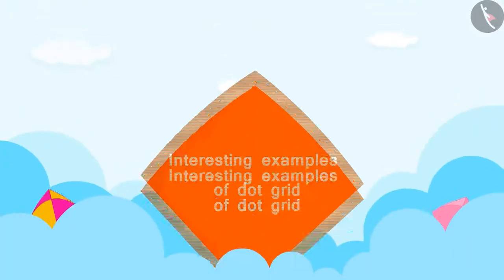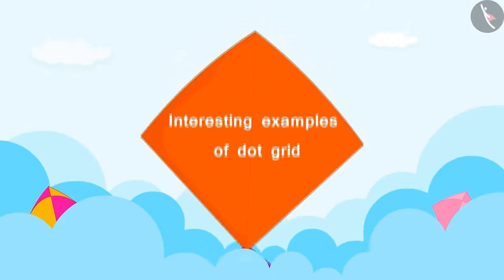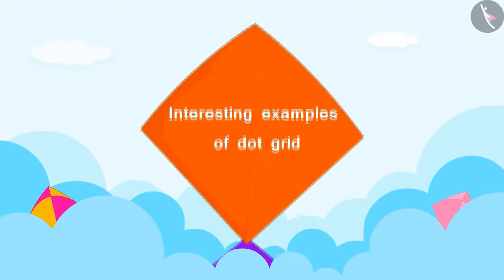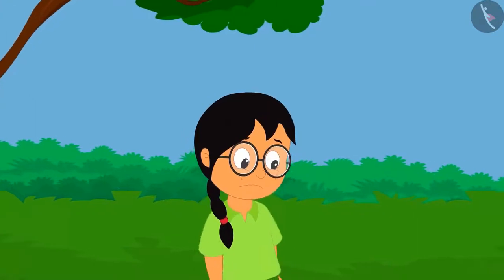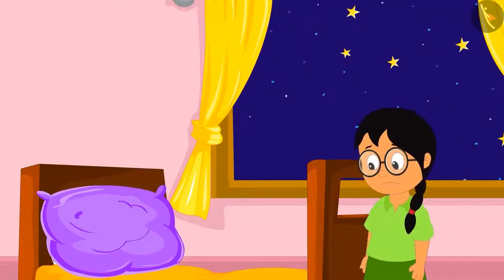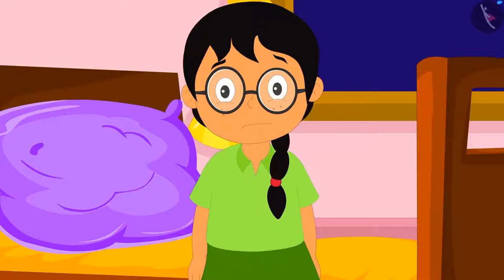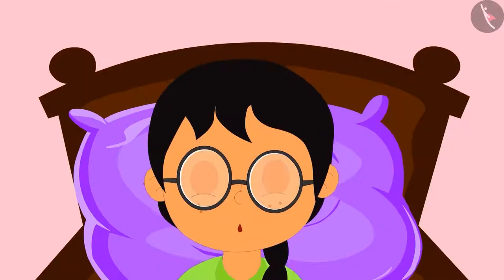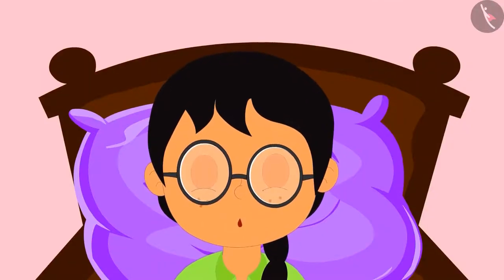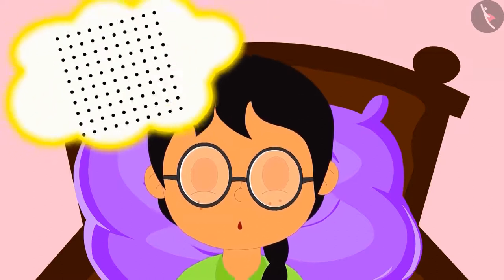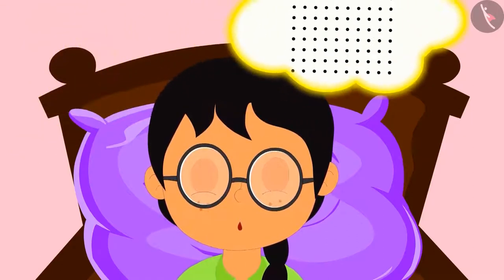In this video we will learn more about this using some interesting examples. Minu is very sad because she could not prove that she is smartest. She went to sleep feeling very sad. In her dreams she sees a dot grid flying.